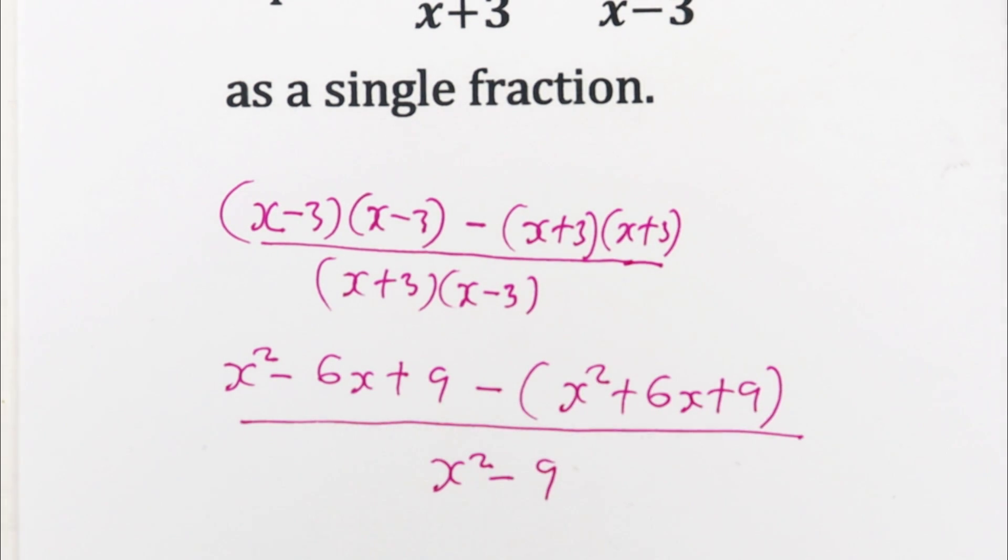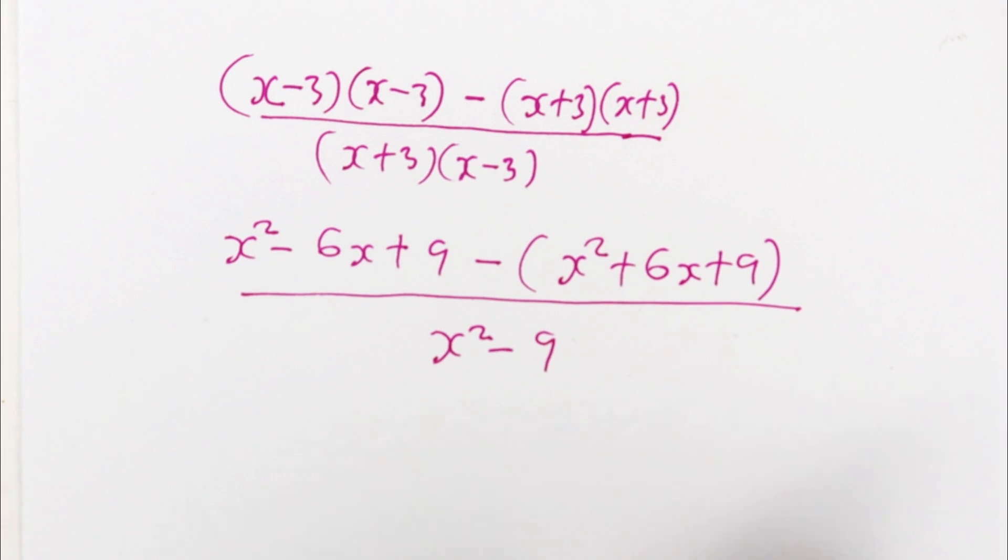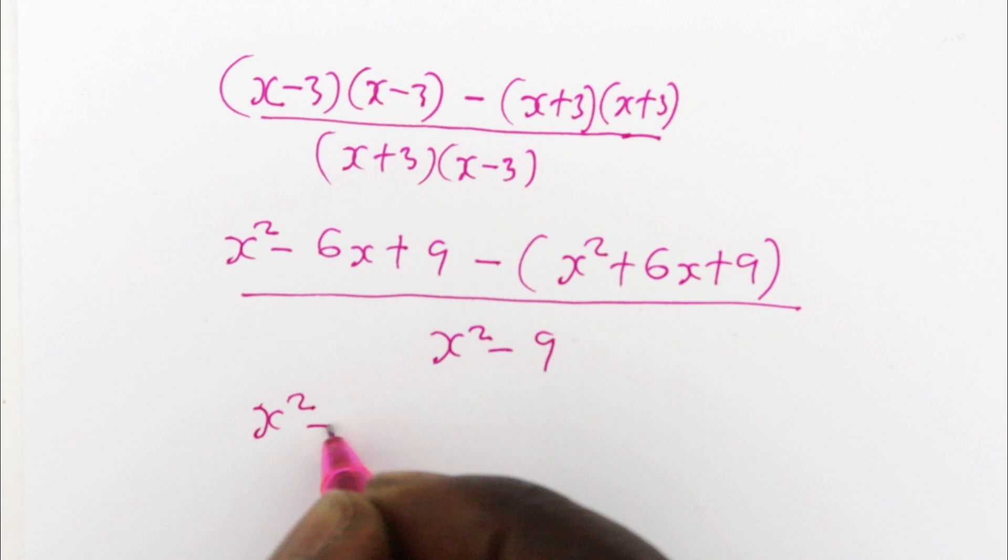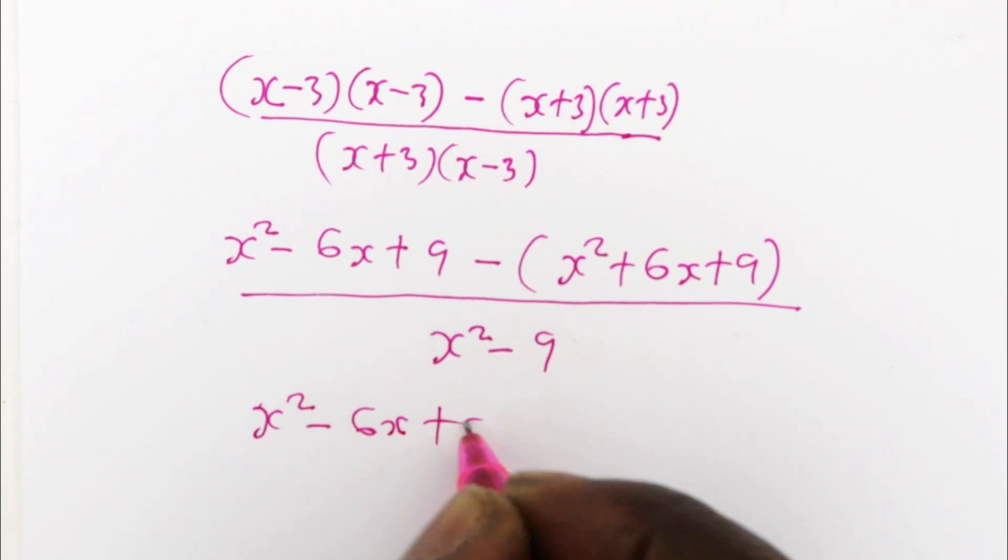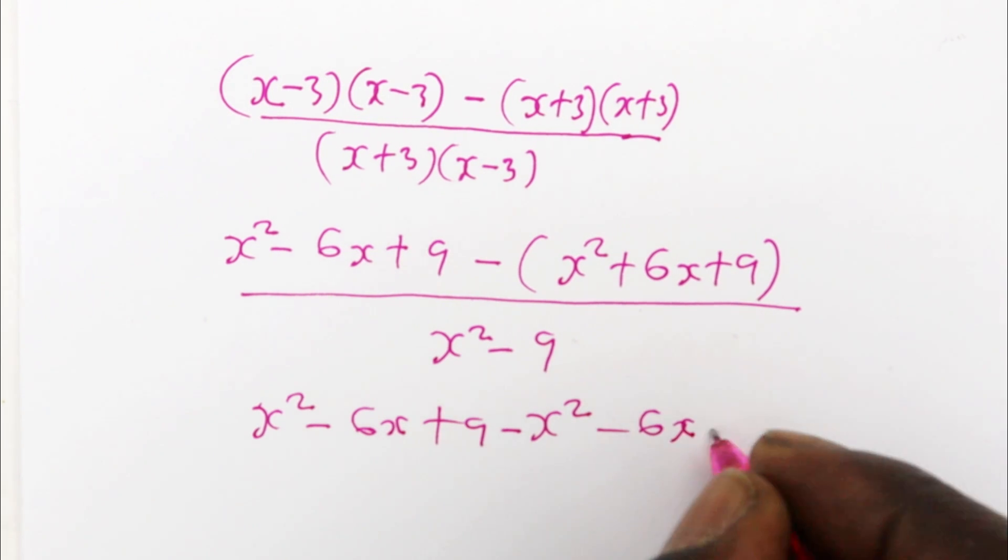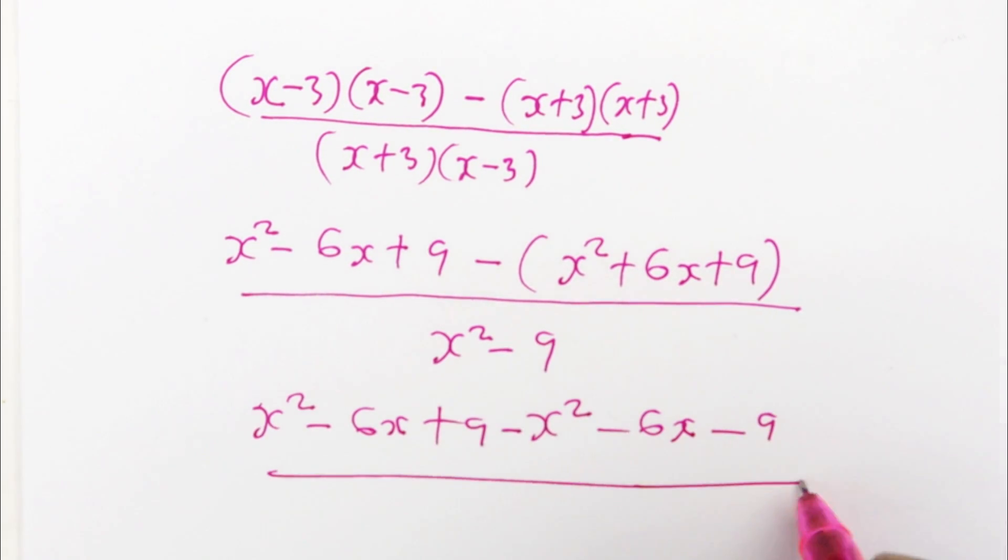So we can now open up this bracket and collect the like terms that are there. So this is x² - 6x + 9 - x² - 6x - 9, and that is over x² - 9.